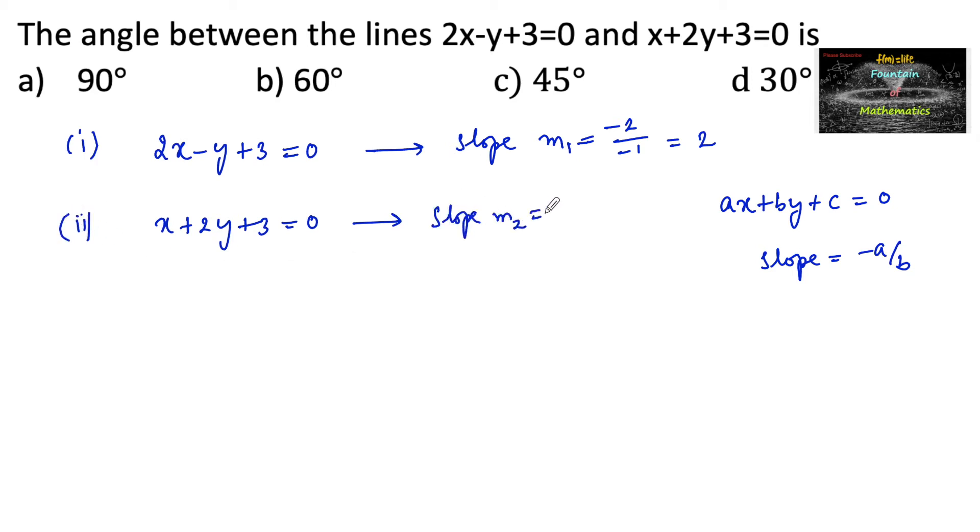So clearly here m1 times m2 is equal to 2 into minus 1 by 2, which is equal to minus 1, which is a condition for perpendicular. So we are getting m1 m2 is equal to minus 1.